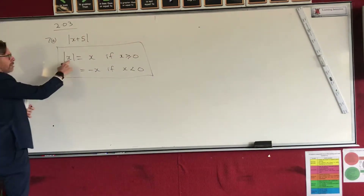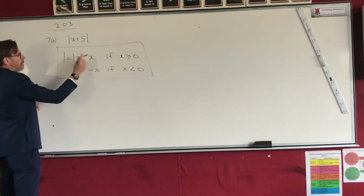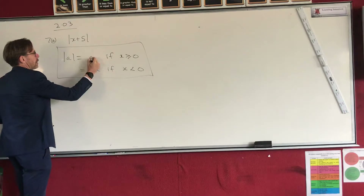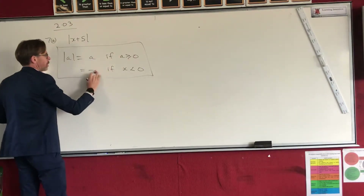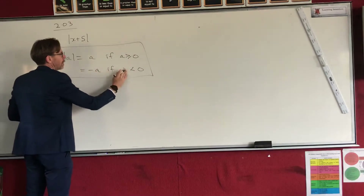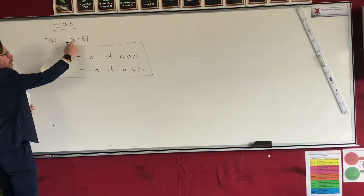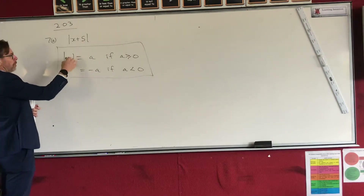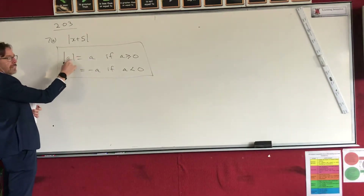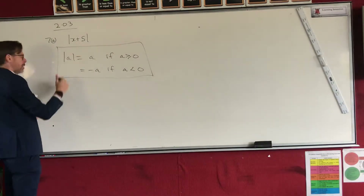Now this x could be anything — I could put an a there, because it just represents a number. The reason I put an a there is because I don't want to get mixed up with this. Now all I've got to do is replace the a with x plus 5.